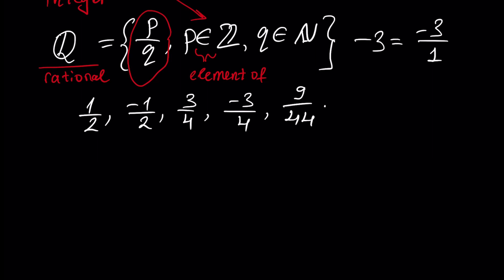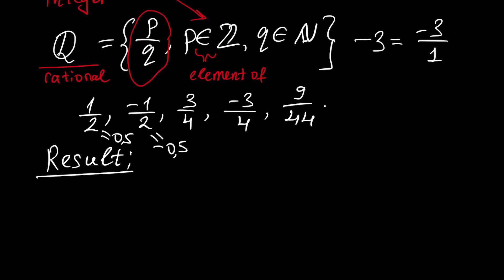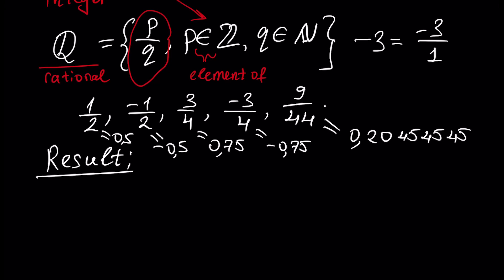We have a very important result for rational numbers. Let's talk about decimal representation. For example, 1/2 has a decimal representation of 0.5. If you calculate using a calculator and divide, 1/2 will be 0.5. Minus 1/2 is minus 0.5. 3/4 is 0.75, minus 3/4 is minus 0.75, and 9/44 is 0.2045 45 45 and so on — where 45 is the period. Take the calculator and check it.